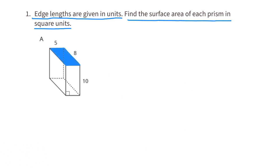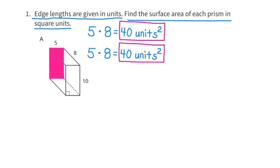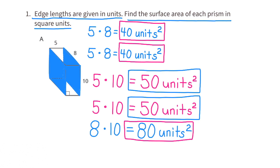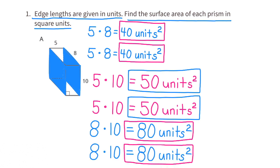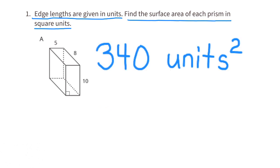For Prism A, the top and bottom bases have dimensions 5 by 8, so the surface area of each is 40 square units. The two sides with dimensions 5 by 10 each have a surface area of 50 square units. The last two sides have dimensions 8 by 10, so each has a surface area of 80 square units. Adding all these together, the surface area for Prism A is 340 square units.